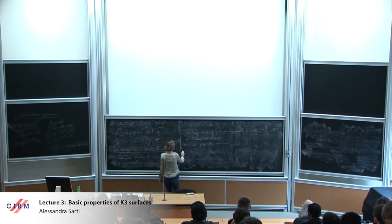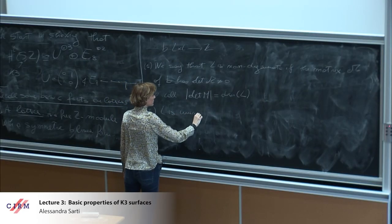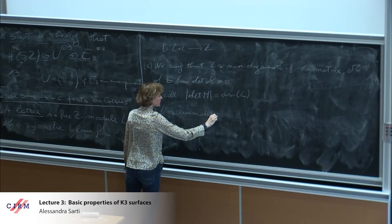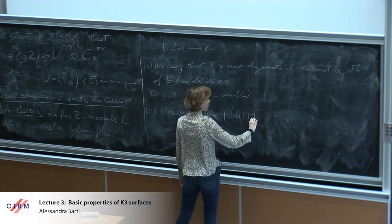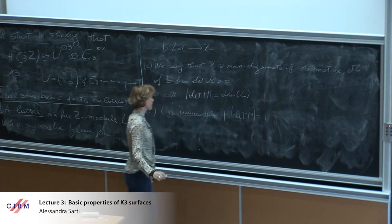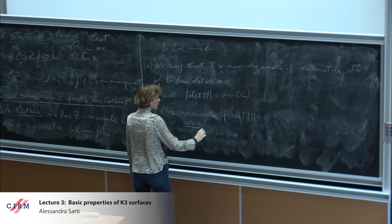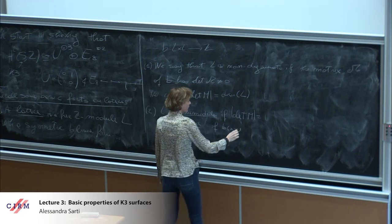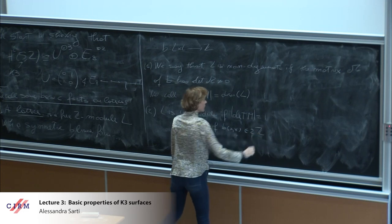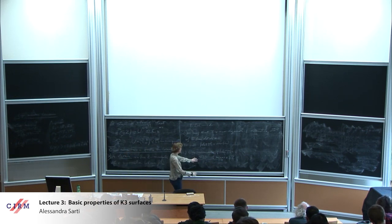Then L is unimodular if the determinant of M equals one. And L is even if the bilinear form applied to x and x is in 2Z, which is the case for K3 surfaces. Otherwise we say that L is odd.